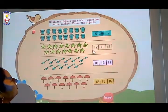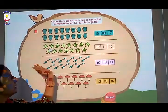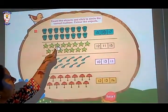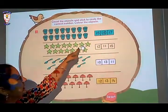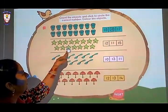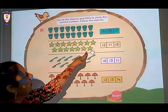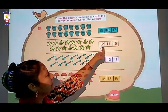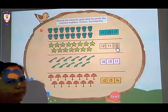Now let's move on to the next one. What are these? These all are stars. Let's count. 1, 2, 3, 4, 5, 6, 7, 8, 9, 10, 11, 12, 13, 14, 15. Where is number 15 written? Here it is. We have to circle that number.